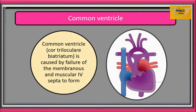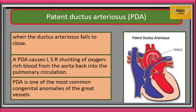We also have common ventricle or cor triloculare biatriatum, which is caused by failure of the membranous and muscular septum to form. This will lead to a trilocular heart. In this condition, we will have two atria and one ventricle.